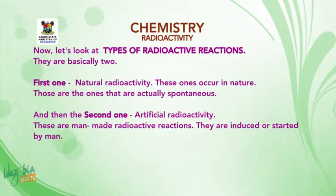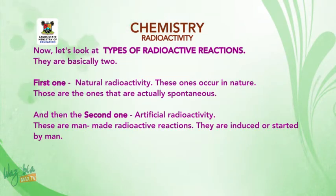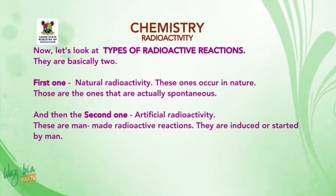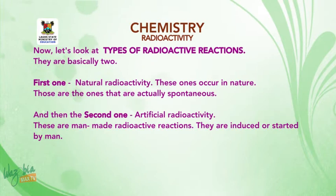Let's look at types of radioactive reactions. There are basically two. The first one is natural radioactivity — these occur in nature and are actually spontaneous. The second one is artificial radioactivity — these are man-made radioactive reactions that are induced or started by man.